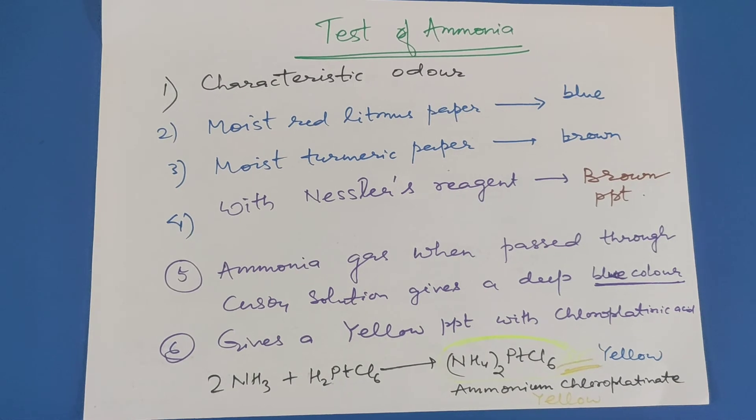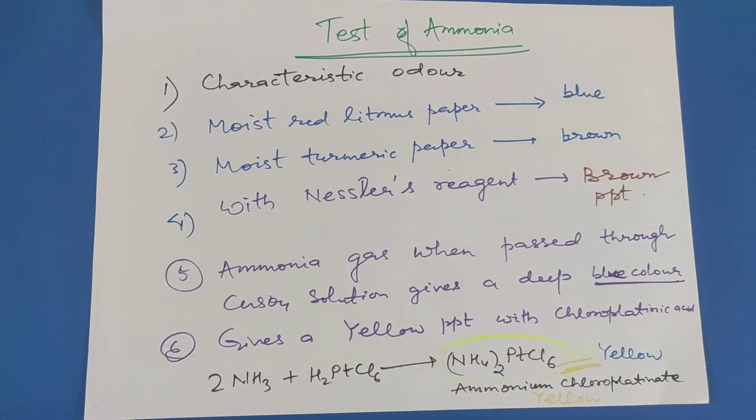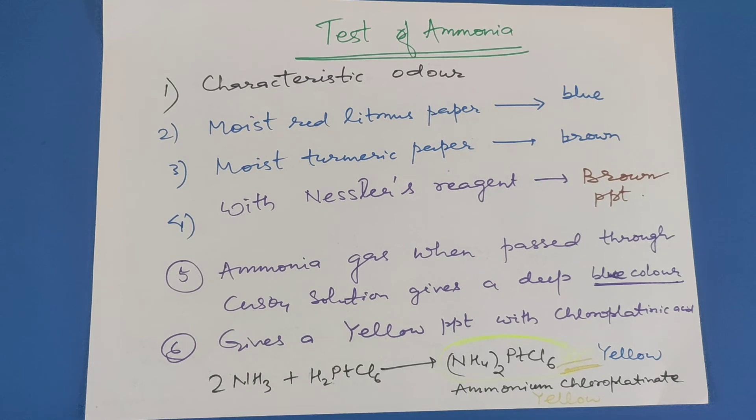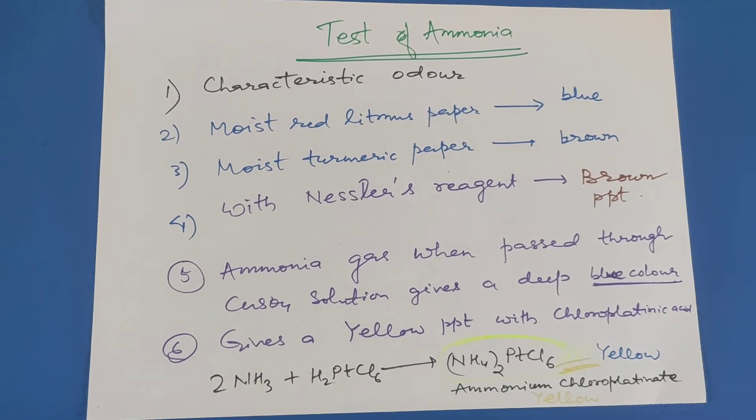So 2NH3 plus H2PtCl6 gives (NH4)2PtCl6, that is ammonium chloroplatinate. It is yellow in color.